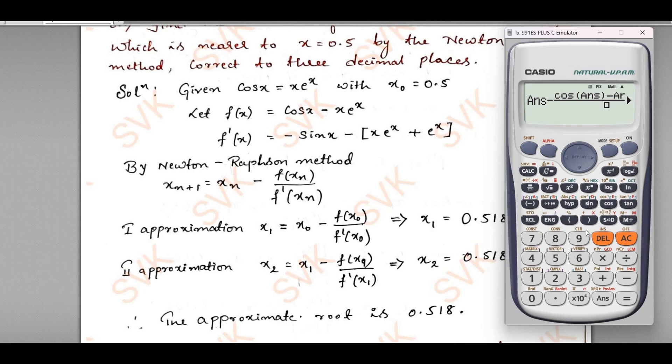Press shift ln, you are going to get e power answer. Come to denominator part. We have minus sin answer, minus sin answer, close the bracket, minus, open the bracket, answer, shift ln, e power answer, come outside the exponential term, plus e power, that is shift ln, answer, come outside and open the bracket, close the bracket.